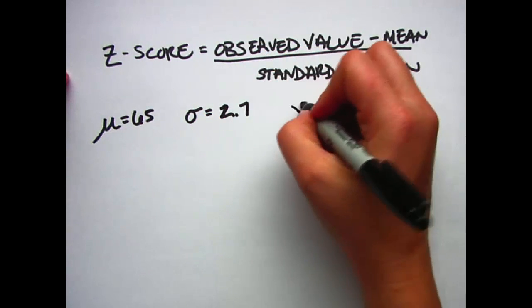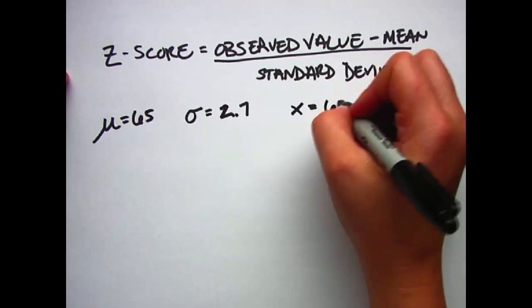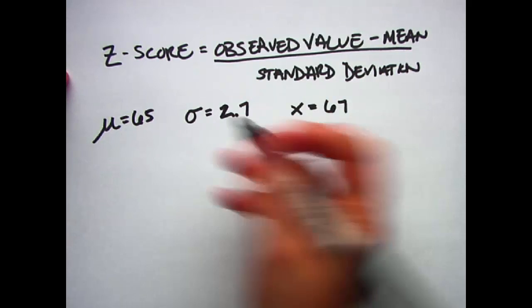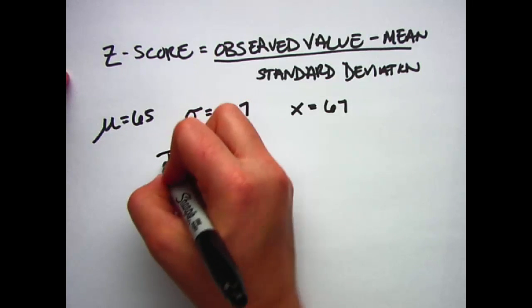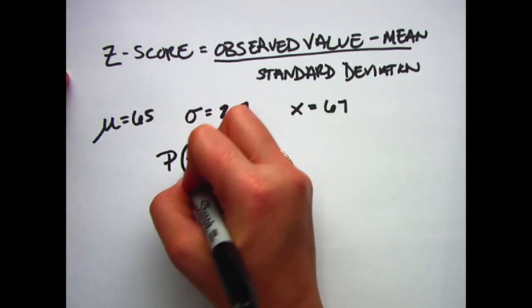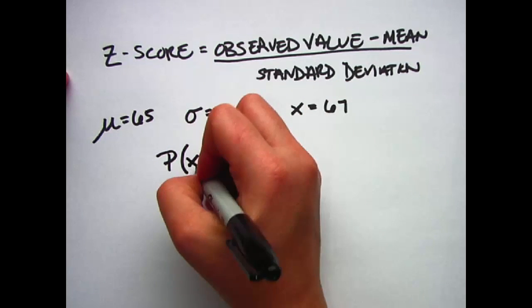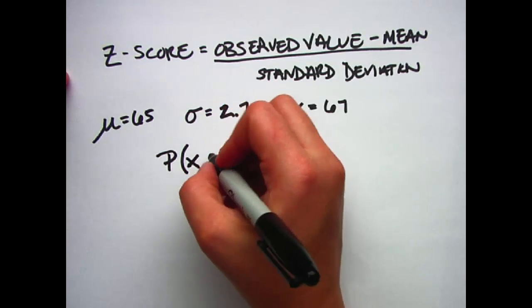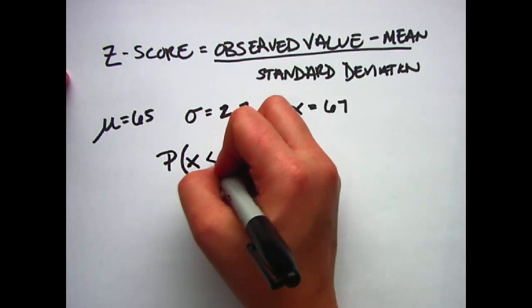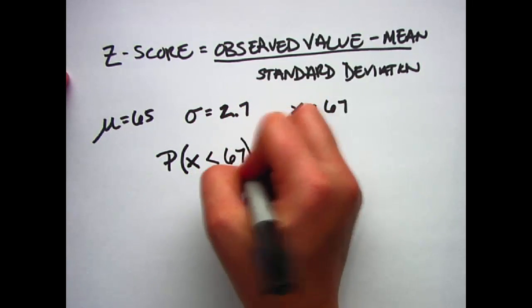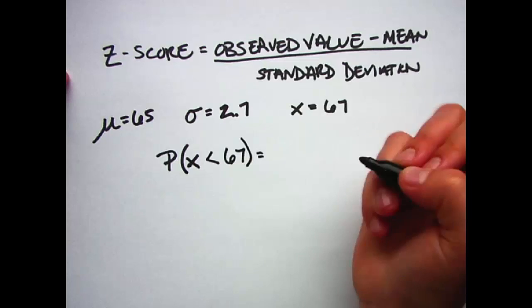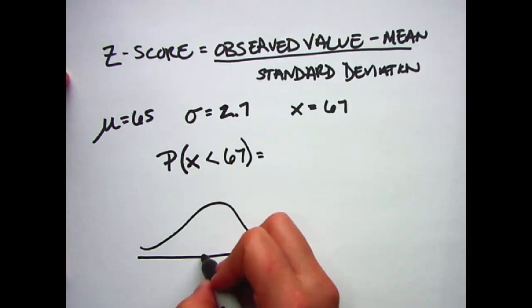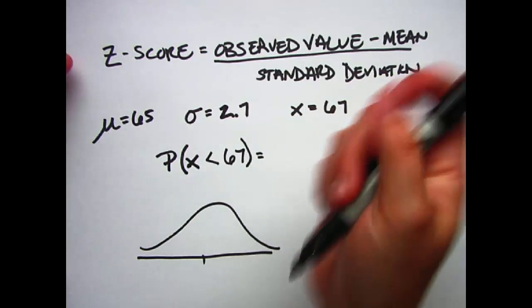Today we want to look at the probability of somebody being shorter than me. My height is 67 inches. In terms of writing that, we write P, probability of someone having a height less than my height, which is 67 inches.